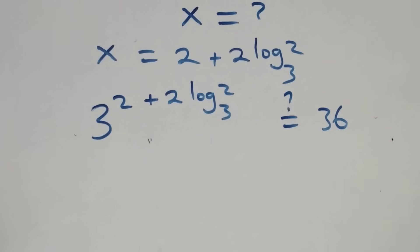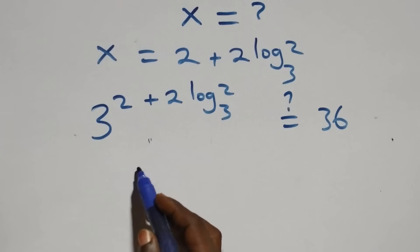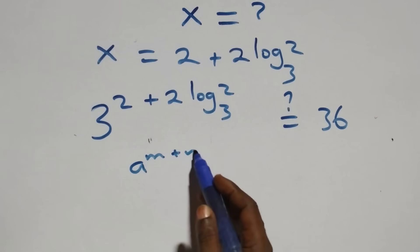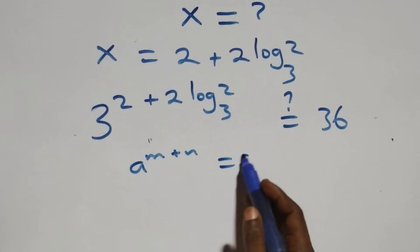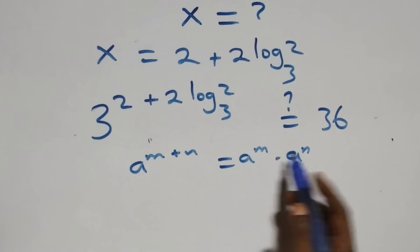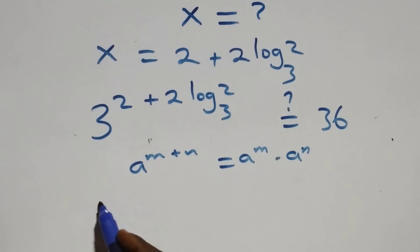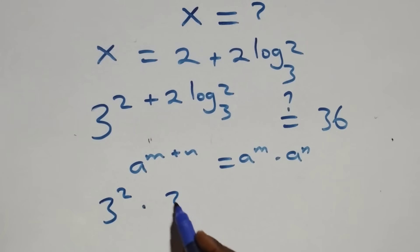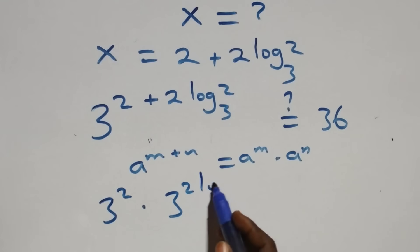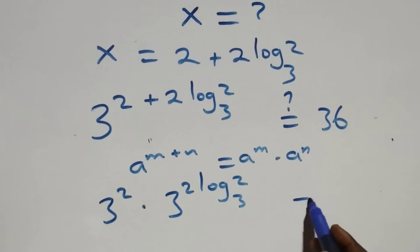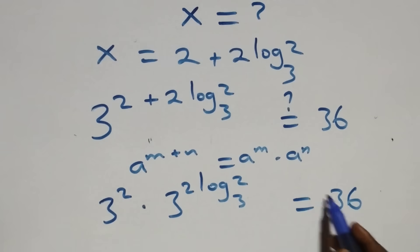Now let's check. We apply the law of indices: when we have a raised to the power (n plus n), this is the same as a raised to the power n times a raised to the power n. That is, we have 3 squared times 3 raised to the power 2 log 2 base 3. Is it equal to 36?